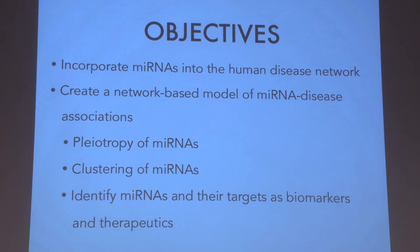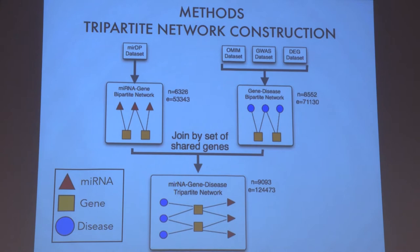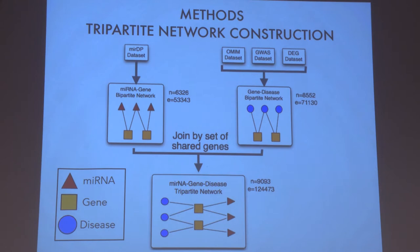Because there are no experimentally validated direct micro-RNA to disease connections, we had to predict these associations. To do so, we used four massive data sets: MIRDIP, OMIM, GWAS, and DAG. From these data sets, two bipartite networks were created — micro-RNA to gene, and gene to disease. A bipartite network is one that contains two different types of nodes. These two bipartite networks were aligned along their set of shared genes in order to form a tripartite network of micro-RNA to gene to disease.